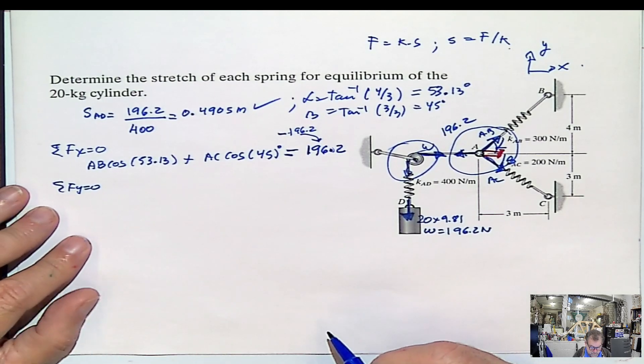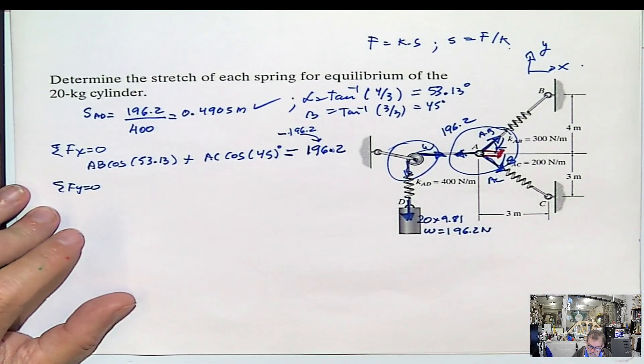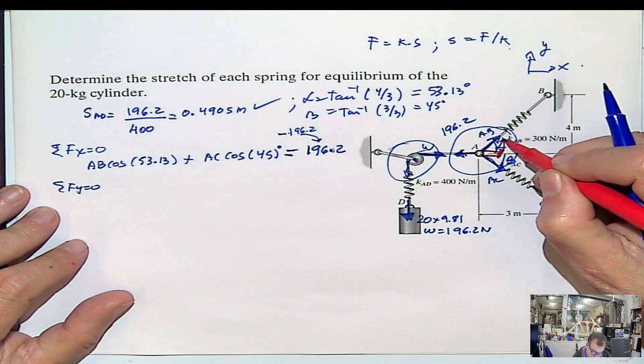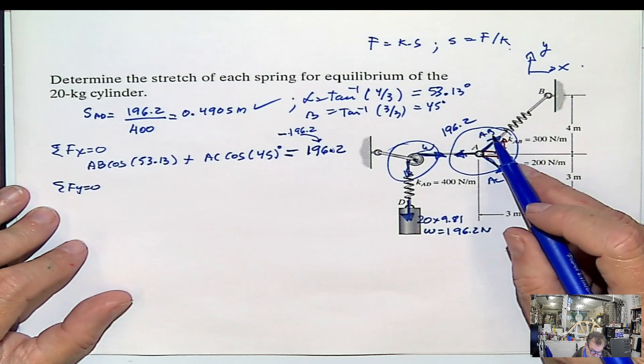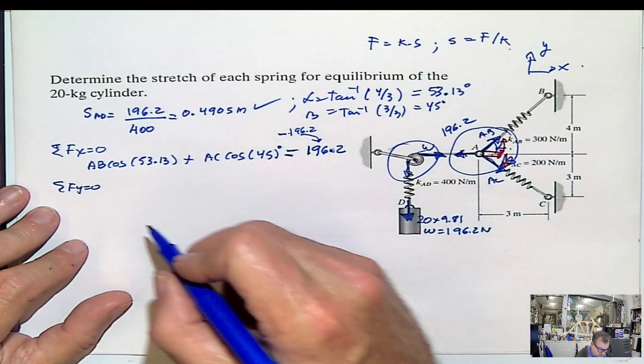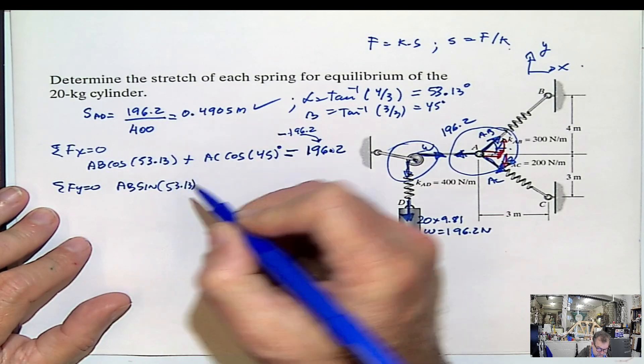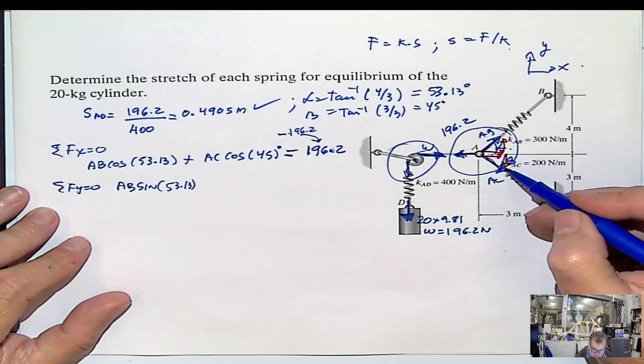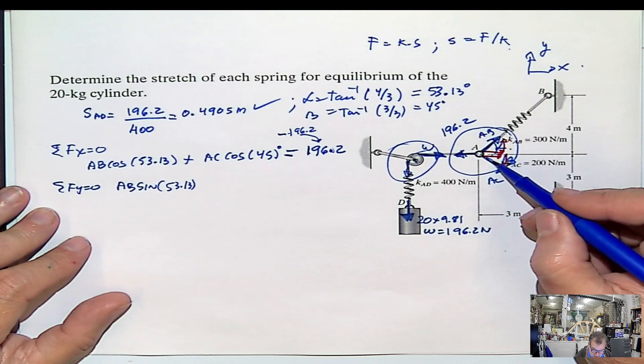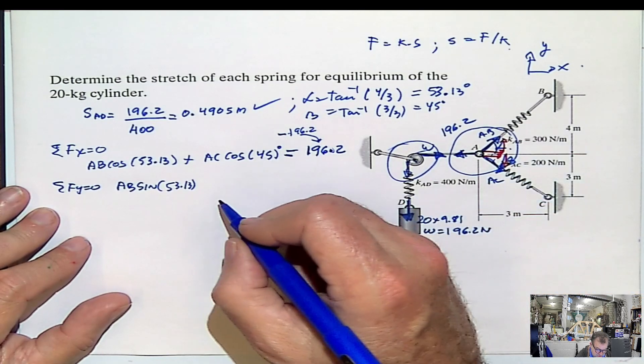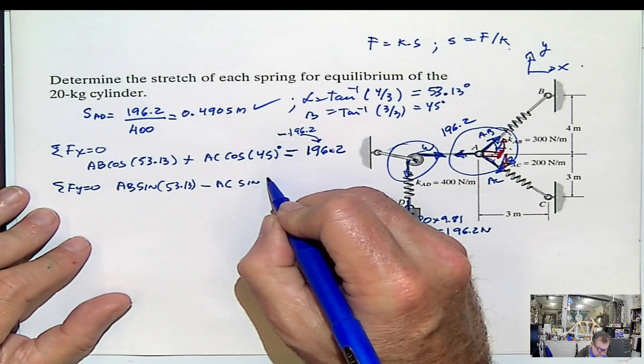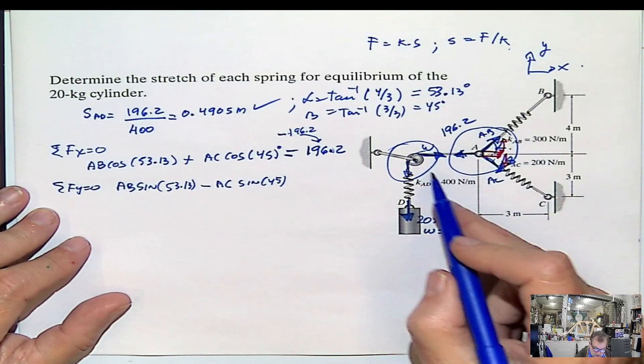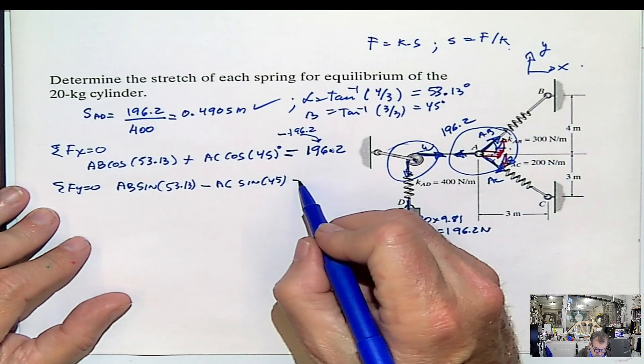And then we do summation of forces in y equals 0. What do we have in y? We have this component for AB, and this component for AC. This component for AB will be AB sine of the angle, because it's opposite. AB sine of alpha going up. This component for AC will be AC sine of beta, but it's negative because it's going down. And we don't have anything else acting in the y direction here, so equals 0.